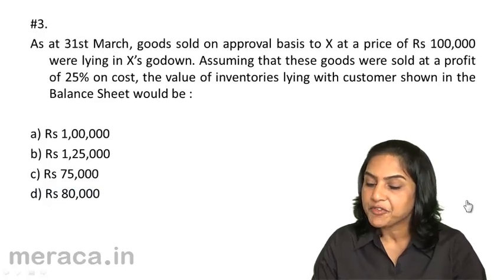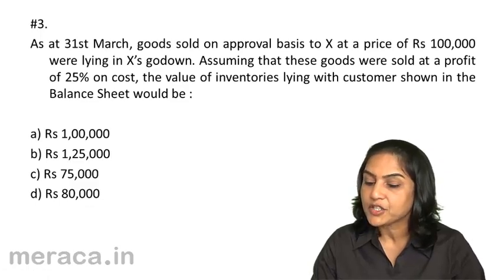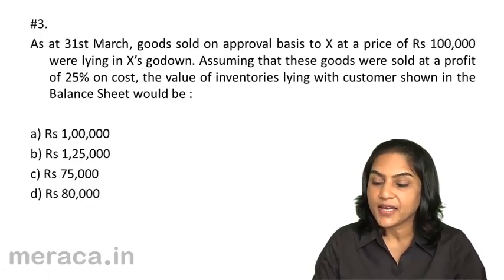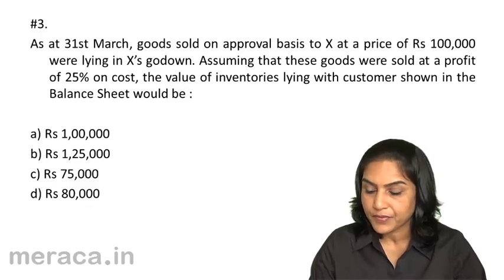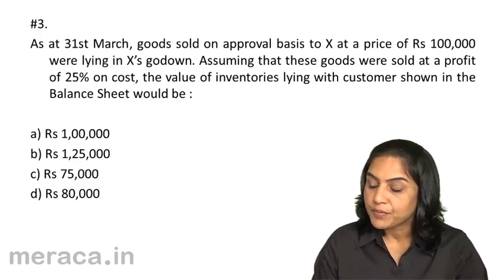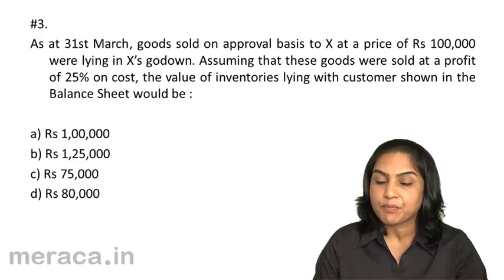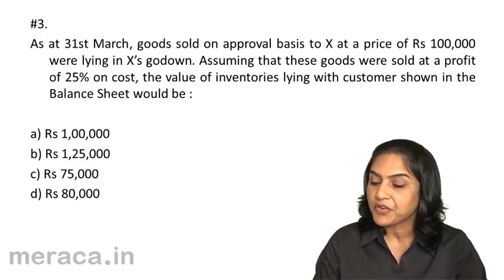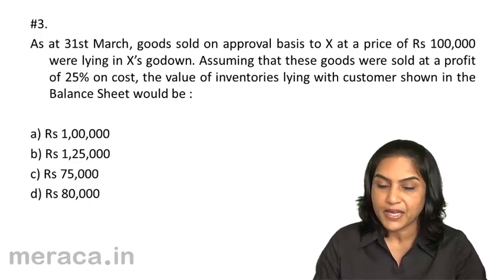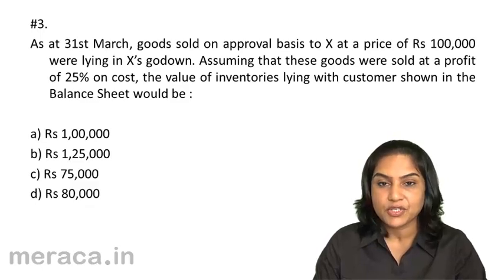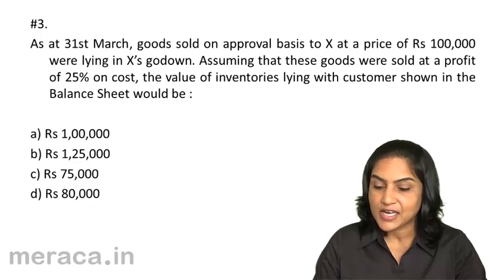Next, as at 31st March, goods sold on approval basis to X at a price of Rs. 1,00,000 were lying in X's godown. Assuming that these goods were sold at a profit of 25% on cost, the value of inventories lying with the customer shown in the balance sheet would be: A. Rs. 1,00,000; B. Rs. 1,00,000 minus Rs. 25,000; C. Rs. 75,000; or D. Rs. 80,000.